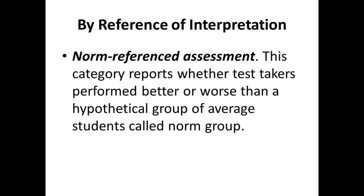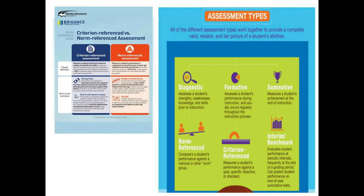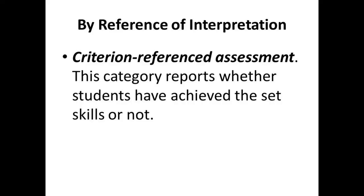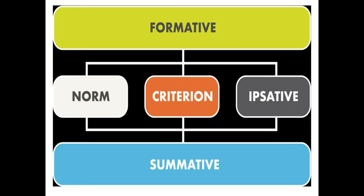Norm-referenced assessment reports whether test-takers performed better or worse than a hypothetical group of average students called the norm group. The selected group of test-takers must typically be of the same age or grade level and must have already taken the test. Simply put, these tests rank students in terms of their achievement. Criterion-referenced assessment reports whether students have achieved the set skills or not. Performances are judged based on a set of standards.